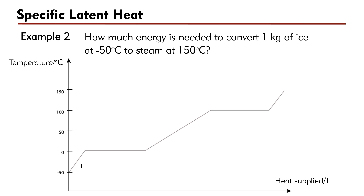The five stages are: one, heating the ice from minus 50 degrees Celsius to 0 degrees Celsius; two, melting the ice at 0 degrees Celsius; three, heating the water from 0 degrees Celsius to 100 degrees Celsius; four, boiling the water at 100 degrees Celsius; and five, heating the steam from 100 degrees Celsius to 150 degrees Celsius.